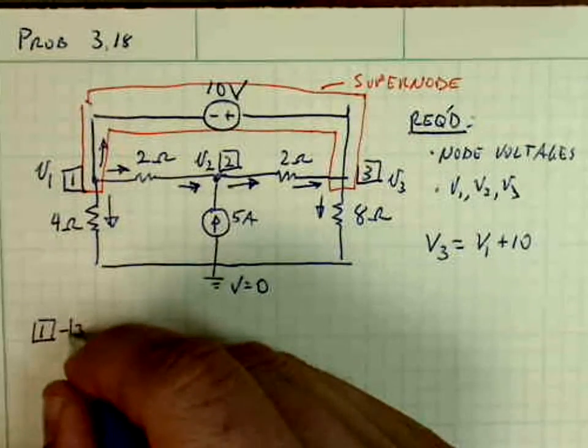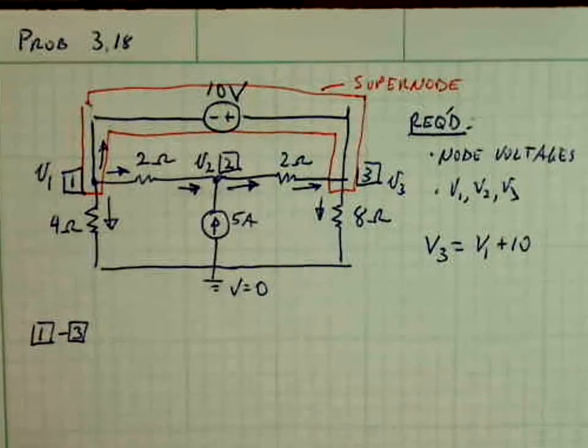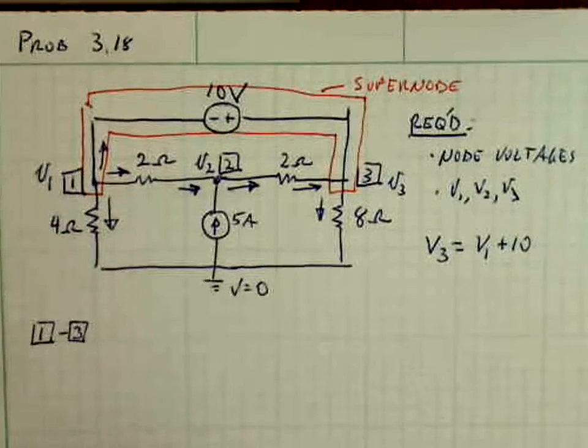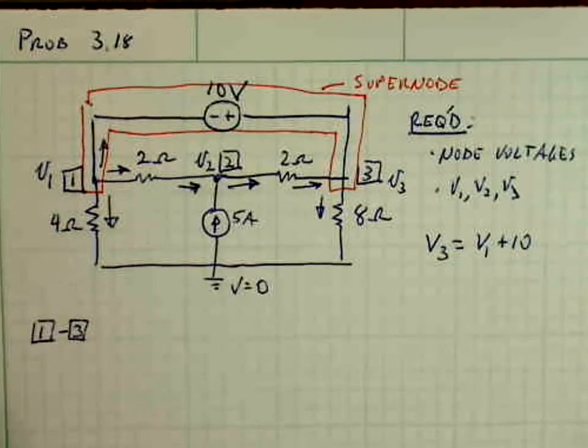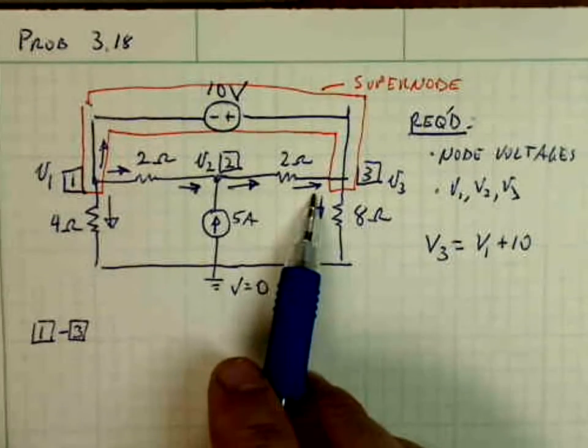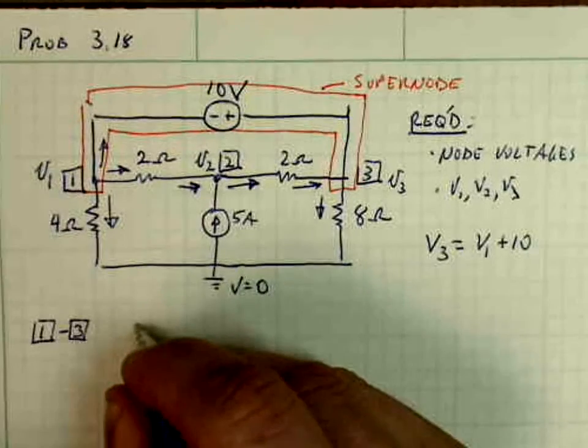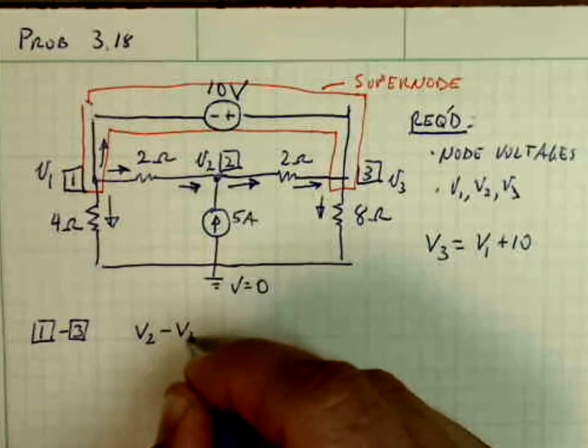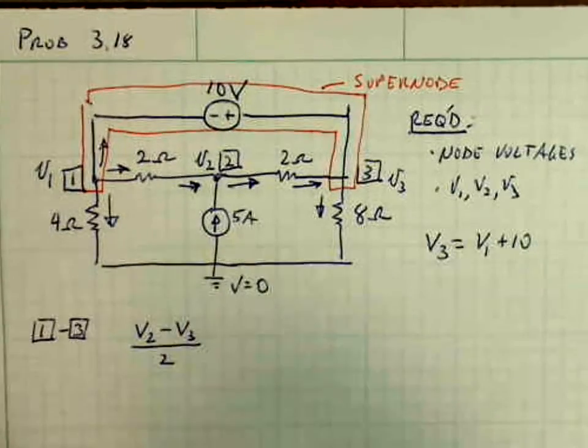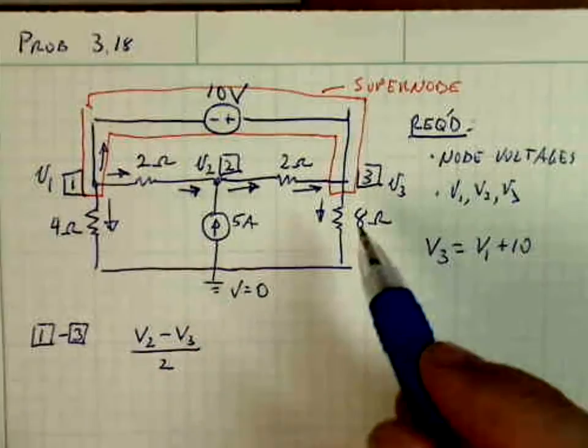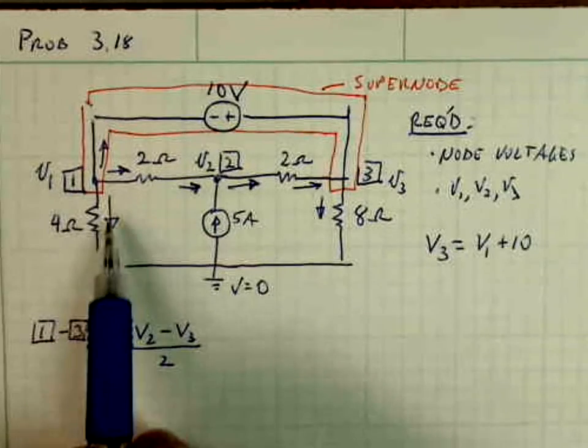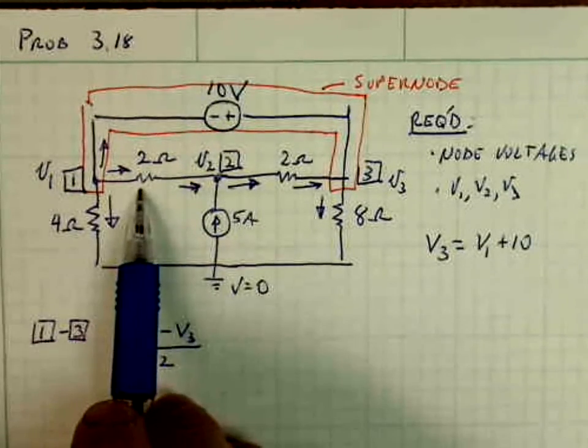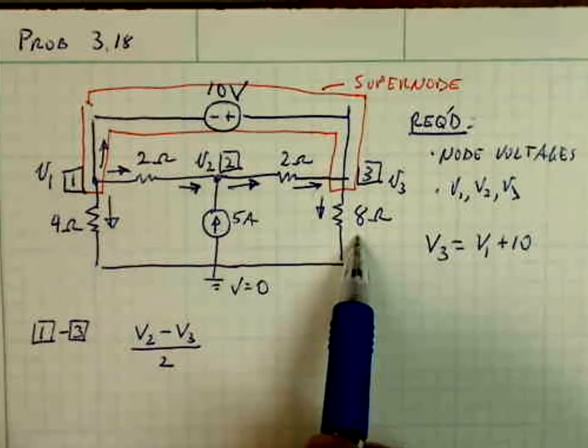So KCL 1 to 3. So what goes in or out of the supernode? Well, what's going in is this current here, which is V2 minus V3 over 2. What's coming out is a current over the 4 ohm resistor, over this 2 ohm resistor, and over this 8 ohm resistor.